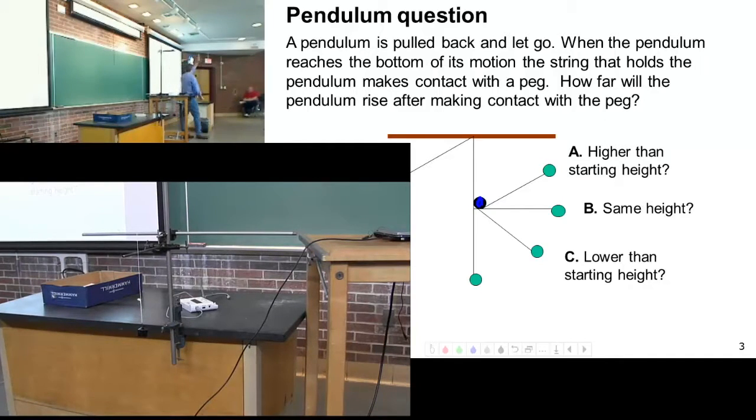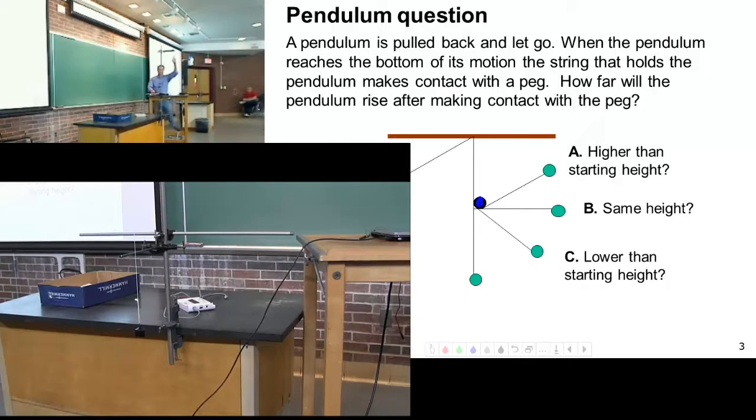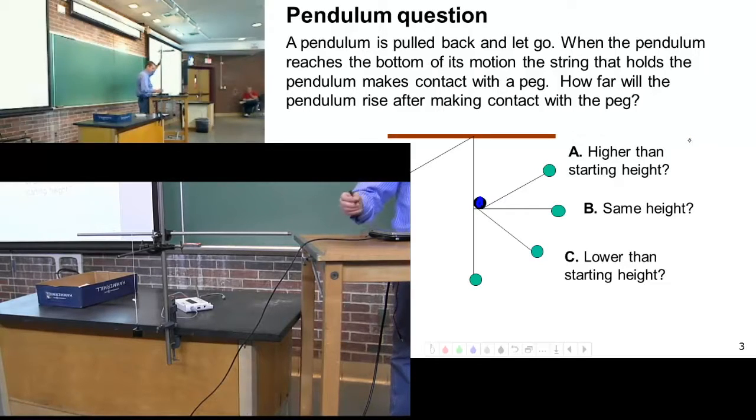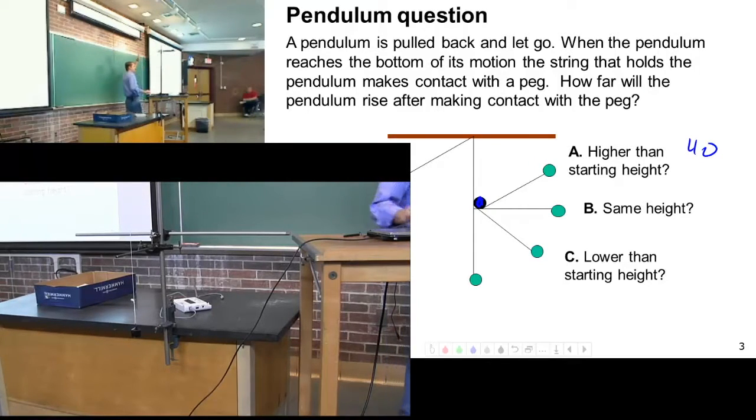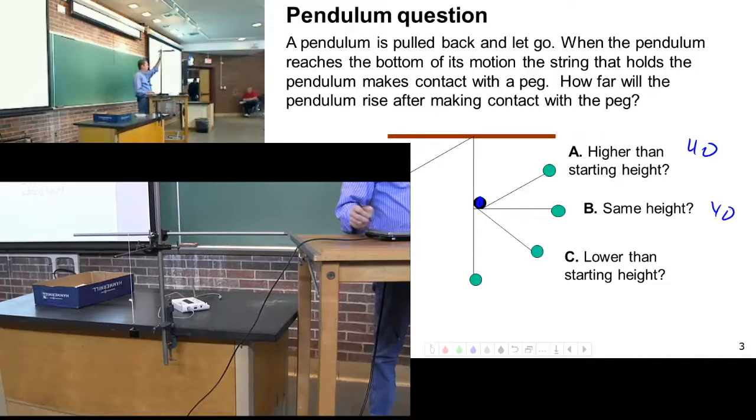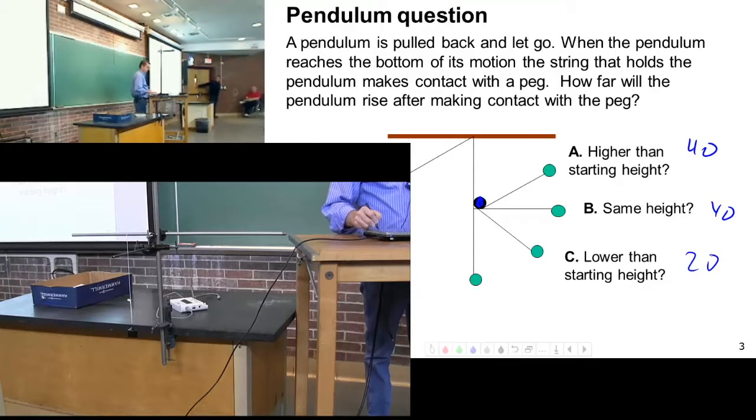So all in favor of C, or A, higher. Okay, let's keep your hands up so I get a count. So it looks like about 40 of you. Same height? Roughly about the same number. Lower? A little bit less. We'll say about 20 of you.